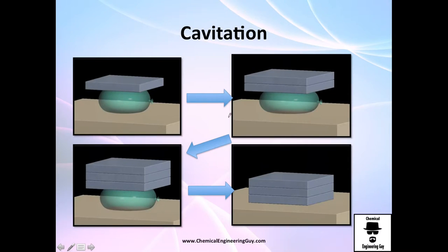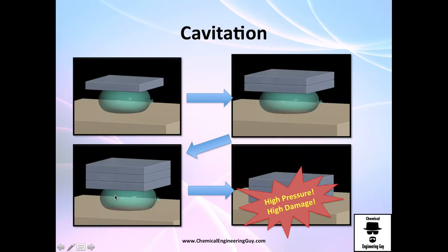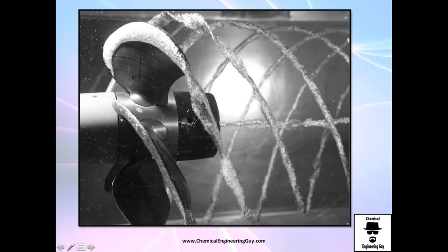To give you an analogy: imagine you have a little bubble and you keep adding pressure until eventually it pops. That popping — that implosion — is like slamming slabs against a surface. That creates a lot of damage. High pressure from implosion means high damage. You can actually see the little bubbles forming on the impeller right here.